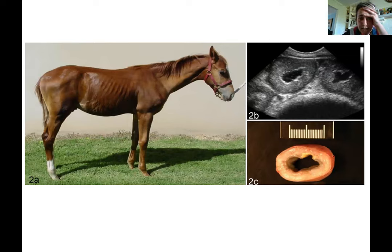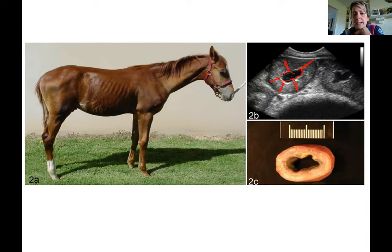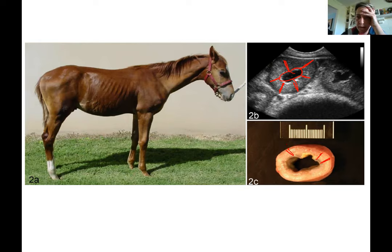This is an example of an unthrifty foal — just skinny and not looking well. For diagnosis, we perform ultrasound and PCR of the feces. On ultrasound you can see how thickened the intestinal loops are. This is the lumen of the intestine — the walls of the intestines are clearly thickened, with very thick mucosa and muscular areas of the intestinal wall visible on ultrasound.